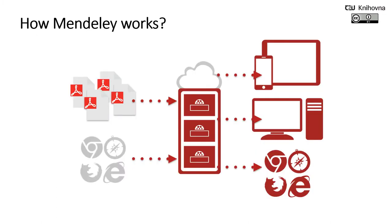How does Mendeley work? Mendeley acts as a repository, or library, for your reference information. You can add papers to your library by importing PDF files stored on your computer, or by retrieving them from another location like online catalogs such as Scopus, EBSCO, and so on. You can also manually create a reference for items that you don't have access to as a PDF.